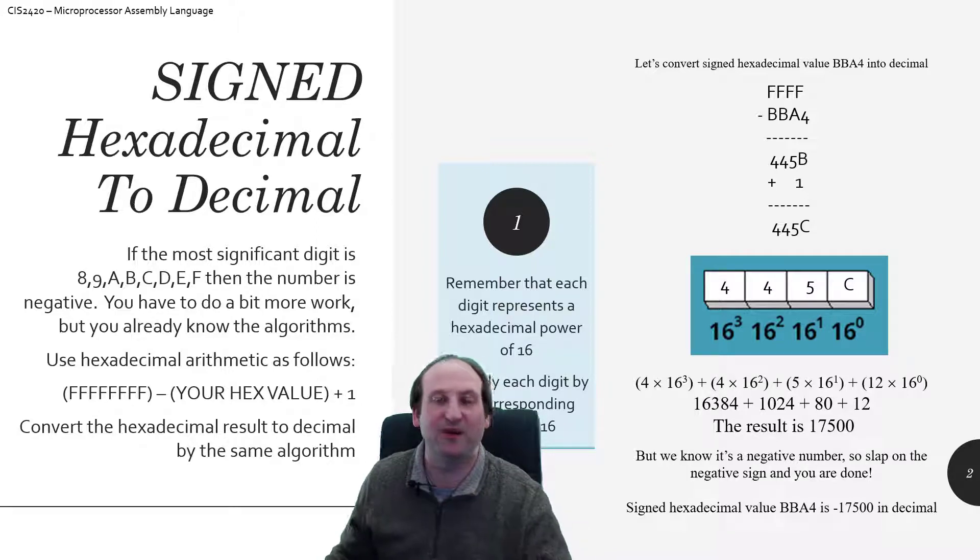So at this point, now we can go back to the algorithm we've previously done. So 4, 4, 5, C, so 4 times 16 cubed, plus 4 times 16 squared, plus 5 times 16 to the first power, plus C, or 12 times 16 to the 0th power.